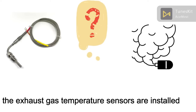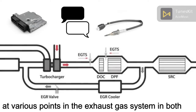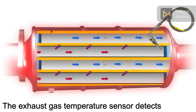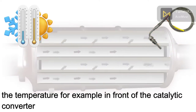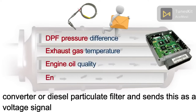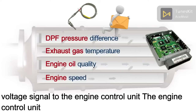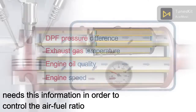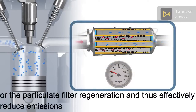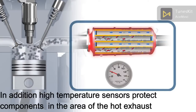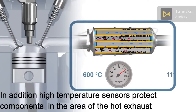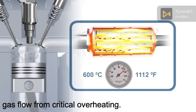The exhaust gas temperature sensor is installed at various points in the exhaust gas system in both diesel and petrol vehicles. It detects the temperature, for example, in front of the catalytic converter or diesel particulate filter, and sends this as a voltage signal to the engine control unit. The engine control unit needs this information to control the air configuration or the particulate filter regeneration, and to effectively reduce emissions. In addition, the temperature sensor protects components in the area of the hot exhaust gas flow from critical overheating.